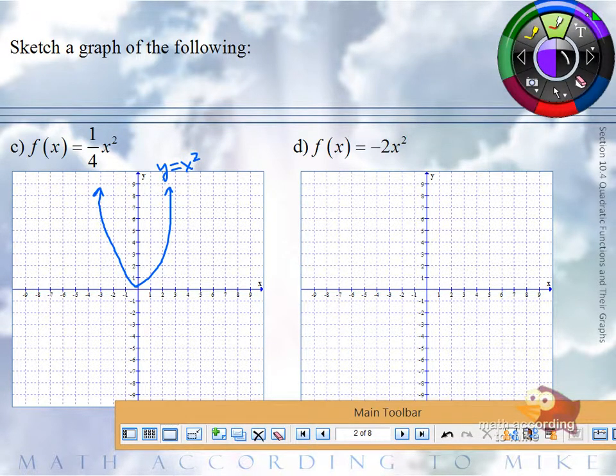So by multiplying the function by a fourth, you're multiplying all the y coordinates by a fourth. So what that does is it vertically compresses the graph, meaning you're squishing it down towards the x-axis. So it looks like it got wider, because now it's taking four times as long to grow.